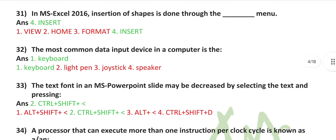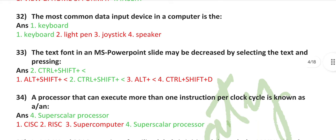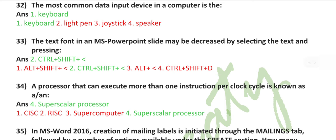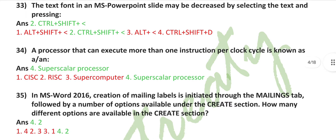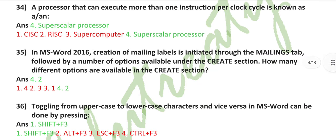In MS Excel 2016, insertion of shapes is done through the insert menu. The most common data input device in a computer is the keyboard. The text found in an MS PowerPoint slide may be decreased by selecting the text and pressing Control plus Shift plus less than. A processor that can execute more than one instruction per clock cycle is known as a superscalar processor.